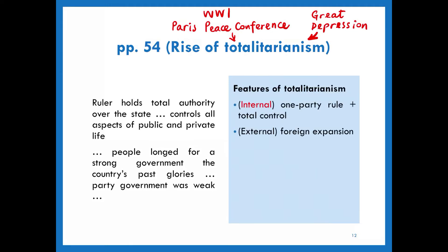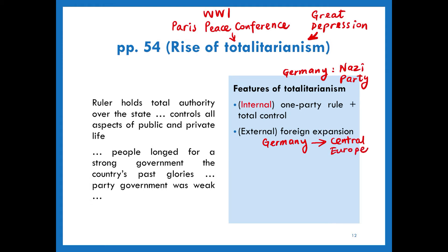On the right-hand side of the PowerPoint, I've shown you two major features of this ideology, with a focus on the first one. Internally, a totalitarianist government emphasizes one-party rule — for example, in Germany, the only ruling party would be the Nazi Party. It emphasizes total control of the country and the people. Usually, totalitarianism also emphasizes foreign expansion. For example, Germany hoped to gain more territory in Central Europe, and later it occupied Austria, Czechoslovakia, and Poland.